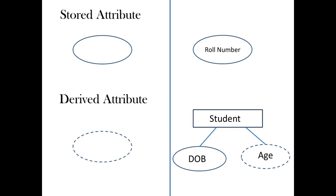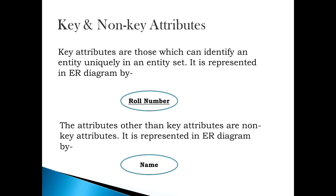Stored Attributes are those whose values are already stored in the database, whereas in Derived Attributes, the values are computed at runtime using the Stored Attributes. Key Attributes are those which can identify an Entity uniquely in an Entity Set. All Attributes other than Key Attributes are non-key Attributes. Examples of both are shown on the screen.